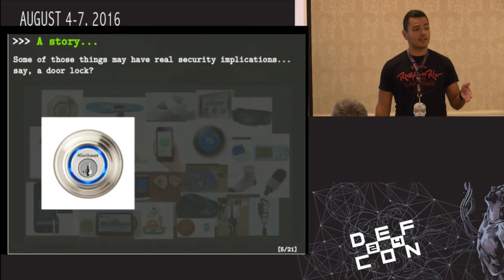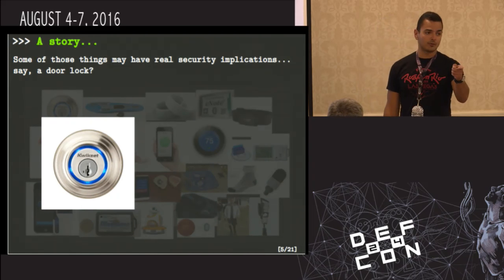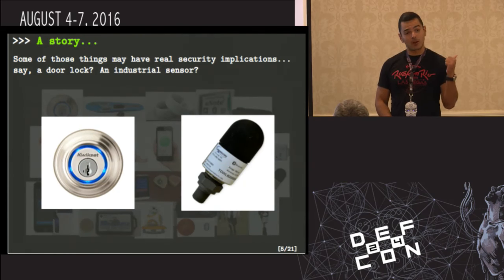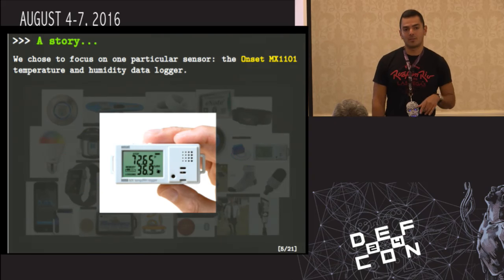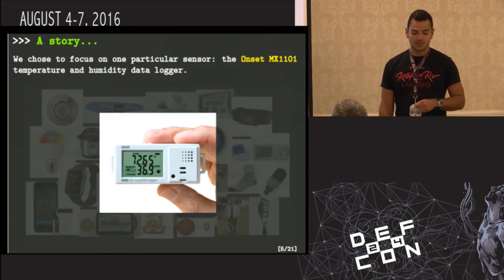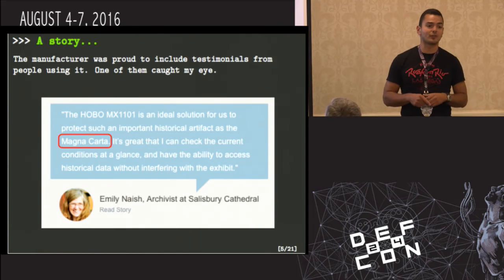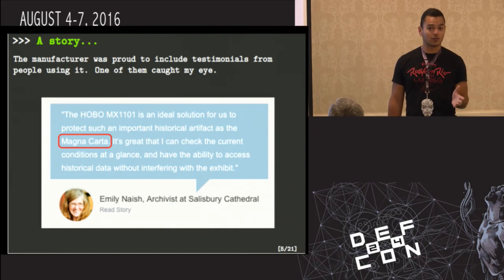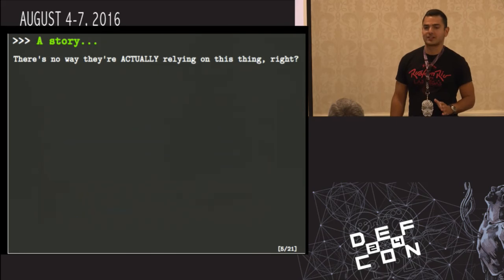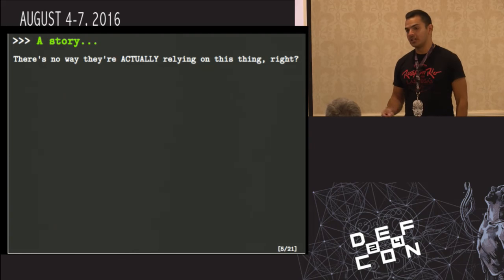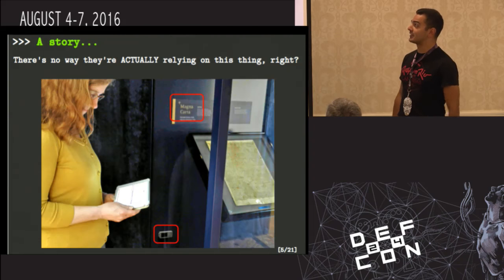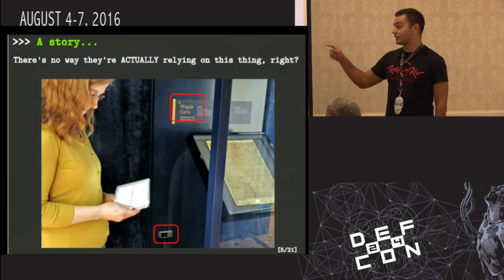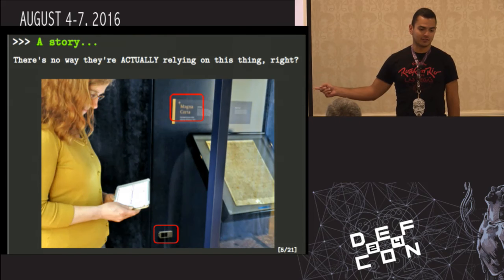Some of these devices have serious security implications. There are Bluetooth locks — actually, one of my coworkers, Anthony Rose, is giving a talk today and tomorrow about how to hack BLE locks. There are also industrial sensors. We decided to focus on a temperature and humidity data logger, specifically the Onset MX-1101. The manufacturer includes testimonials — one lady claims she uses it to monitor the Magna Carta, one of the four copies in England, and there's a marketing picture of her holding the companion app controlling the sensor inside the Magna Carta's case.